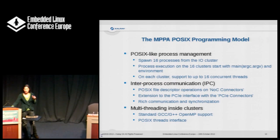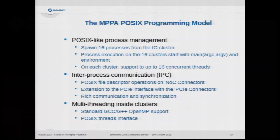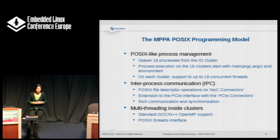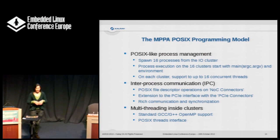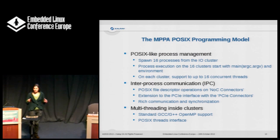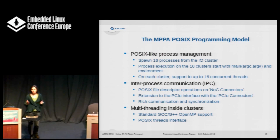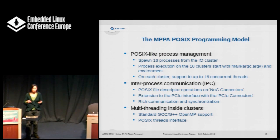We have many different programming levels, but I'll focus on the POSIX programming level, which is easiest to understand for Linux people. Each cluster is represented and visible like a process. Your program starts in the IO cluster; it can run up to 16 processes that start on the cluster. Within the cluster, each thread runs on a separate core. We offer an IPC communication mechanism between cores, and at the threading level you can either use pthreads yourself or use OpenMP with compiler assistance.